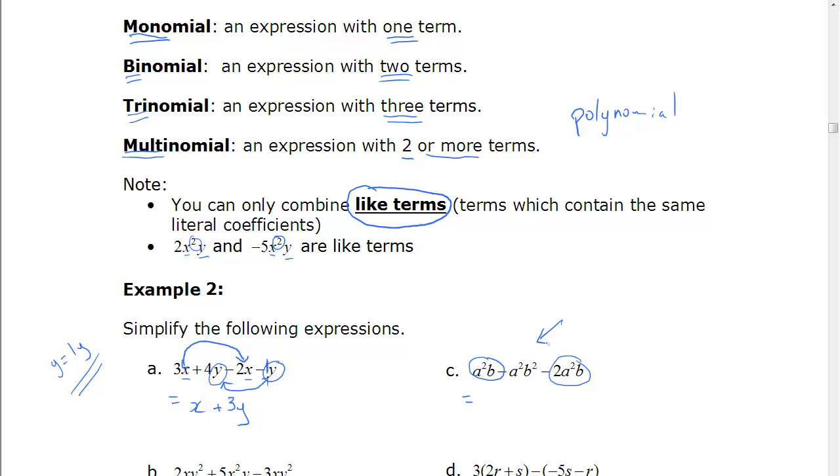This one is not a like term. And the reason for that is the b here is squared. These ones aren't. So these are like, this is different. So when we put these together, we end up with 1 minus 2 is negative 1 a squared b, or just negative a squared b, minus a squared b squared. And those can't be combined anymore.